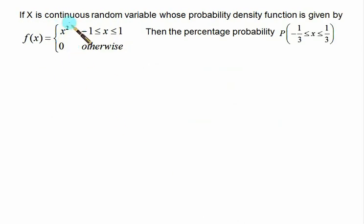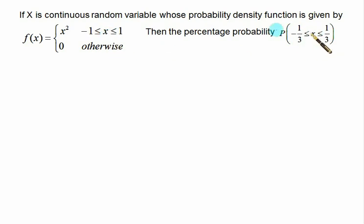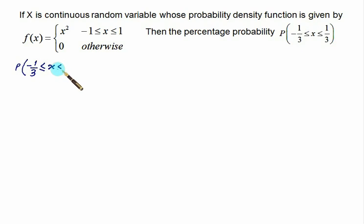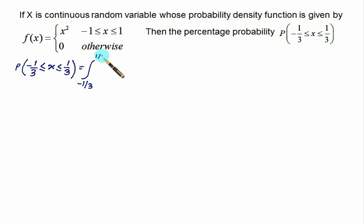In the next problem, the probability density function is a continuous function and we need to find the probability P(−1/3 ≤ x ≤ 1/3). The function is defined from minus 1 to 1. We directly compute the integral from −1/3 to 1/3 of x² dx.